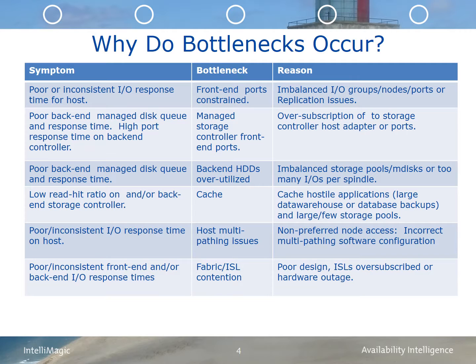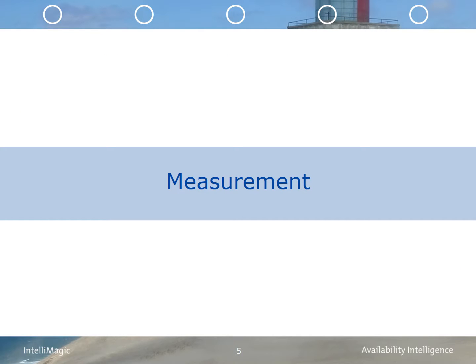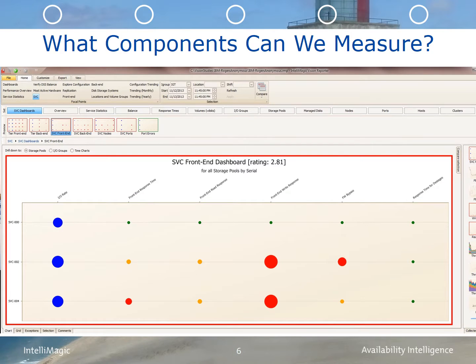In this section, we'll take a look at the IBM SVC components and their associated measurements. SVC provides numerous measurements, such as volumes or VDISKs, managed disks, and node statistics. These can be combined with logical configuration information to provide information for other components, such as storage pools. IntelliMagic Vision provides measurement of the nodes, the node ports, volumes, storage pools, as well as managed disks.